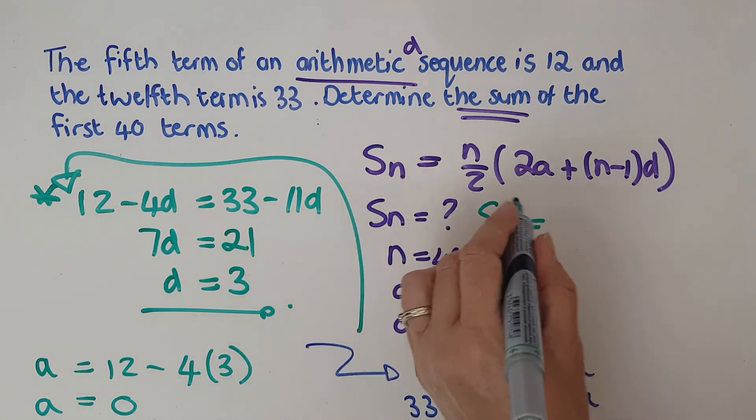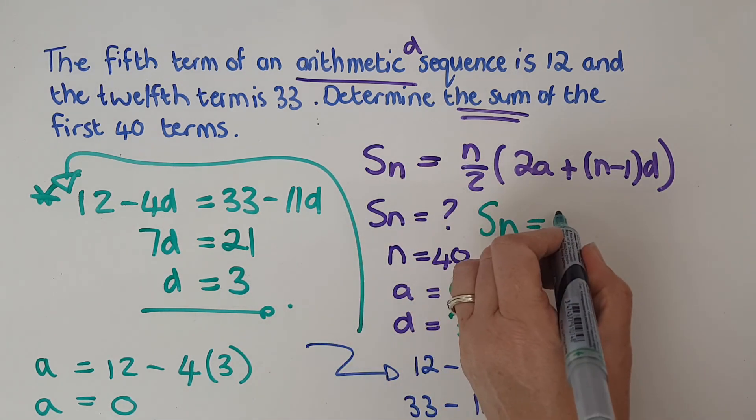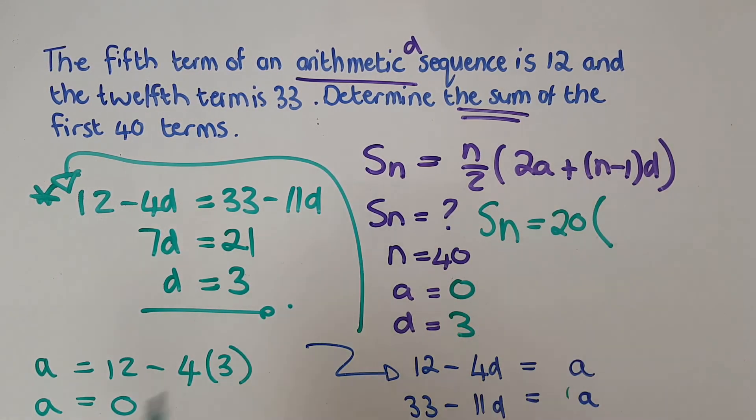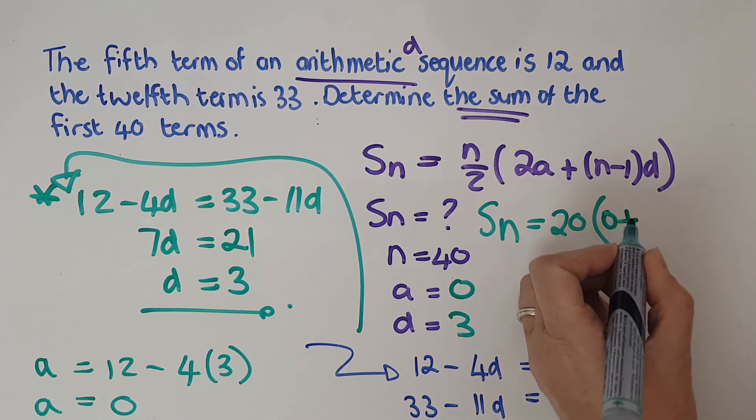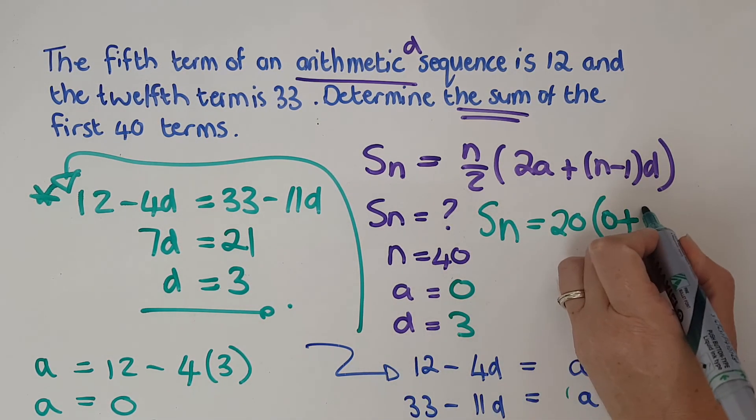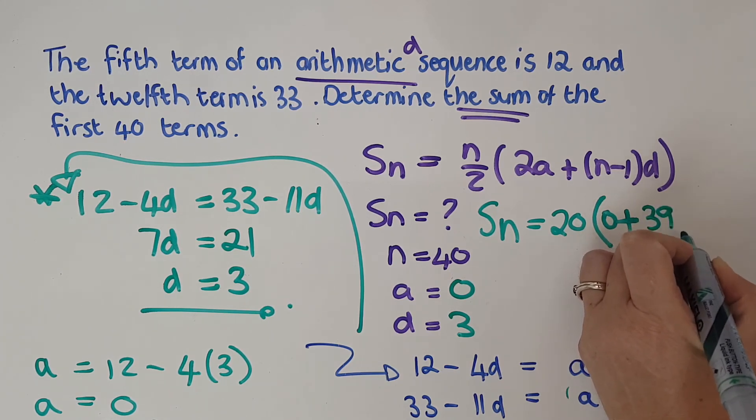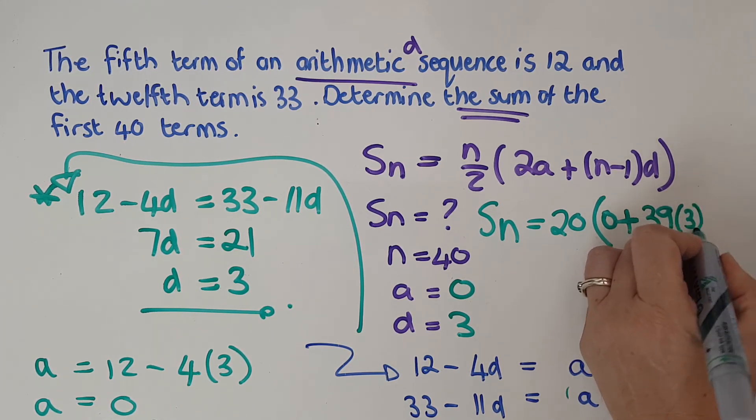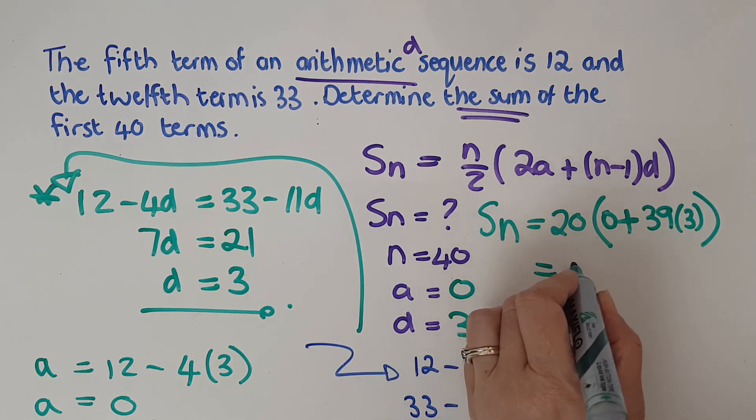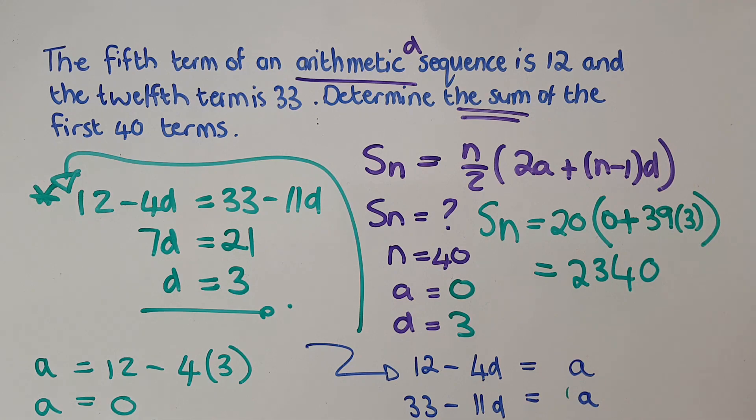When I sub in here, my n is 40. 40 over 2 I can do straight away and go to 20. Then I'm going to have 2a, but that's 0, so that is going to be 0 plus n minus 1—n was 40, so it's 39—d is 3. Plug and play into calculator and I get to 2340.